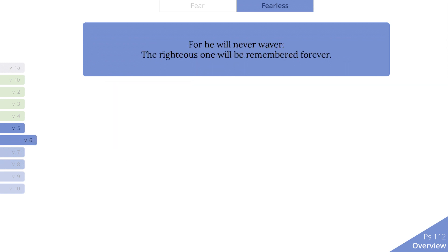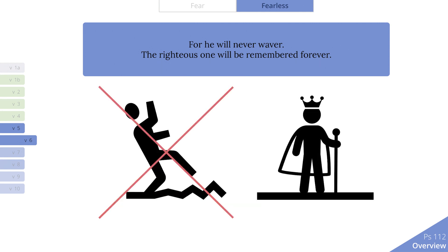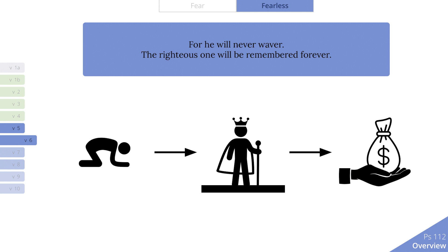Verse 6. Many people seem to have righteousness when circumstances are good, but few continue to do so when circumstances are difficult. This man, however, will never be so greatly affected by negative circumstances to the point where he might waver with worry. This man is secure. Since he is a righteous man, he will be remembered just like the Lord's commandments are in Psalm 111 — forever. We see here how fearing the Lord leads to the security of never wavering, which is illustrated in his abundant generosity.